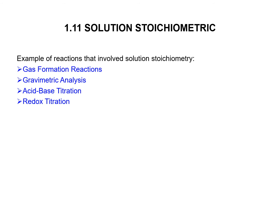These are the examples of reactions that involve solution stoichiometry: gas formation reactions, gravimetric analysis, acid-base titration, and redox titration. So all of these calculations involve stoichiometry. We will see on the next slide.